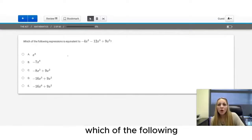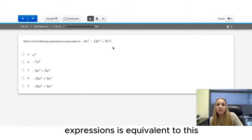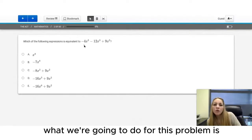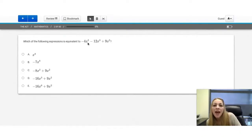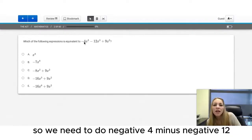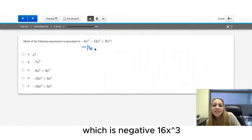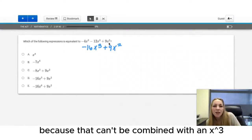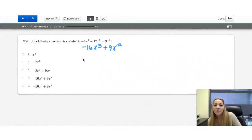Question number two. Which of the following expressions is equivalent to this? What we're going to do for this problem is combine like terms. X cubed and x cubed can be combined together. So we need to do negative 4 minus negative 12, which is negative 16 x cubed. And then we just have 9x squared, because that can't be combined with an x cubed. Looking for that in my answers, I get choice D.